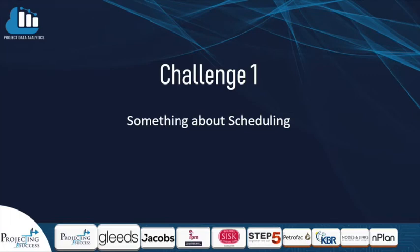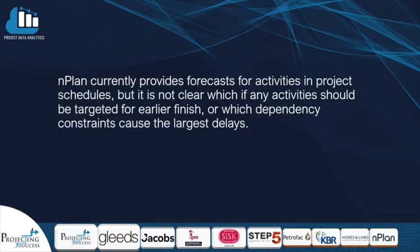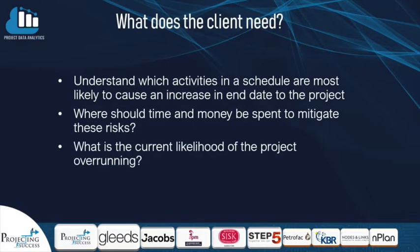We're team Something About Scheduling and today we're going to talk through how we've worked to achieve challenge one. This challenge looks to utilise NPLAN's probabilistic data relating to program schedules to identify areas of risk to the project end date, or opportunities where the project end date could be reduced. This is highly important to a client who want to understand the activities in a schedule that are most likely to cause delays, but also where they can spend their time and money to mitigate these risks. Finally, they would also like to understand the likelihood of a project overrunning as a whole.